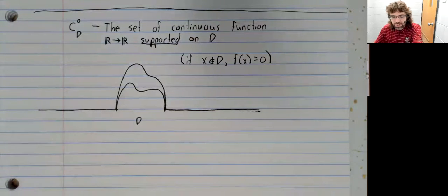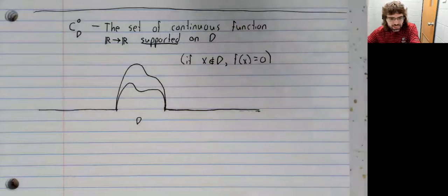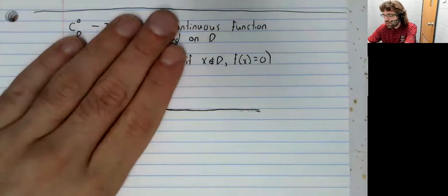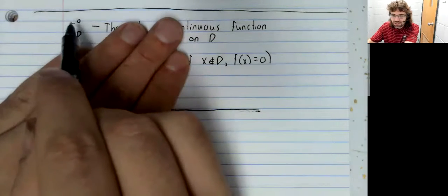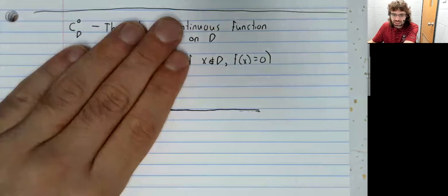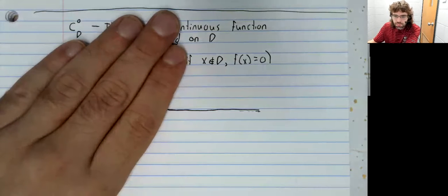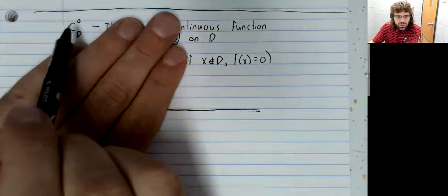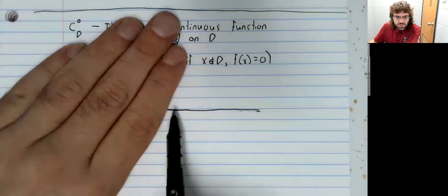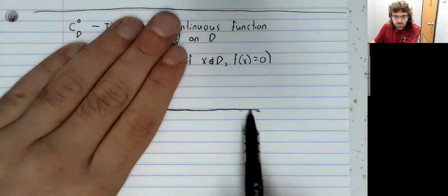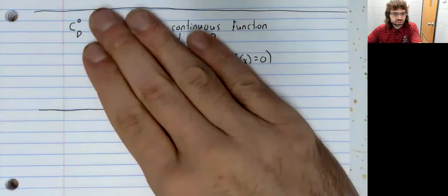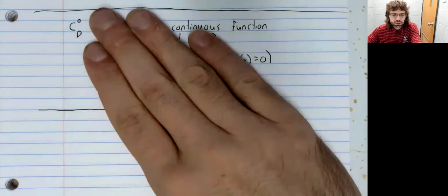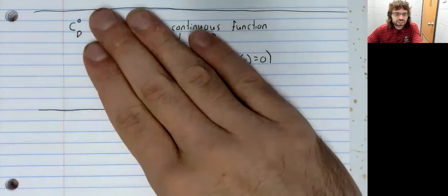And if we have functions in D and we add them, well, if two functions are here—sorry, a function isn't in D, D is a set of real numbers. If two functions are here, they are zero outside of D. Zero plus zero is zero, so their sum is zero outside of D.